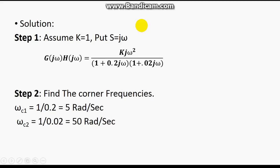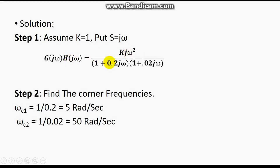There is only a little bit of change in the solution for this kind of problem. In the first step, we assume K is equal to 1 and solve the normal Bode plot. Then we put the gain crossover frequency ω = 5 rad/s and determine the value of K. With K = 1 and substituting s = jω, the system is already in standard time constant form (1 + T₁s)(1 + T₂s), so G(jω)H(jω) = K(jω)² / [(1 + 0.2jω)(1 + 0.02jω)].